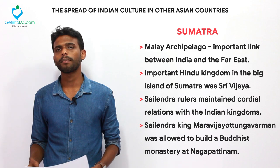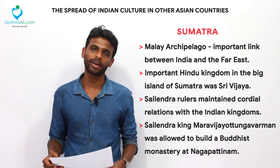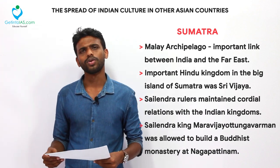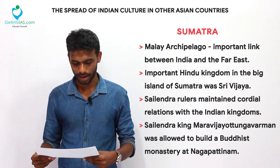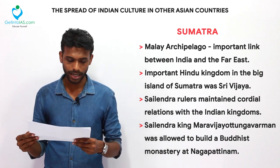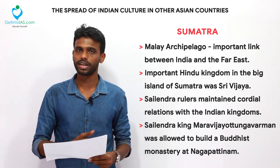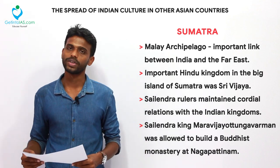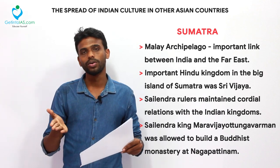In the Malay Archipelago, the important kingdom was the Srivijaya, which expanded through maritime trade and later became the Sailendra empire. Rajendra Chola conquered the Sailendra empire for a time, while Rajaraja I maintained good relations with Srivijaya. One such relation allowed the Sailendra king Mara Vijaya to build a Buddhist monastery at Nagapattinam. The Sailendra rulers were Mahayana Buddhists and maintained close relations with Indian kingdoms.